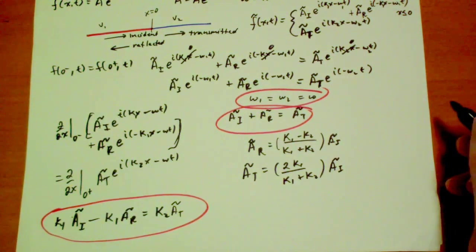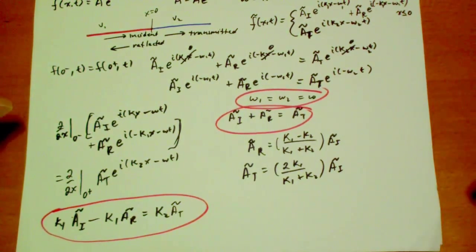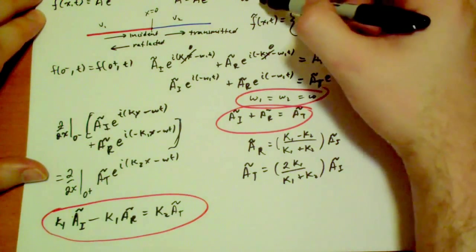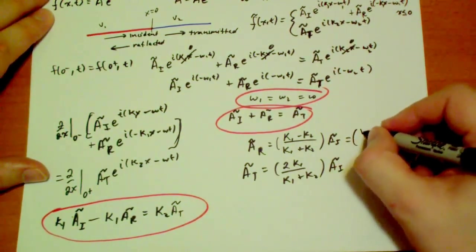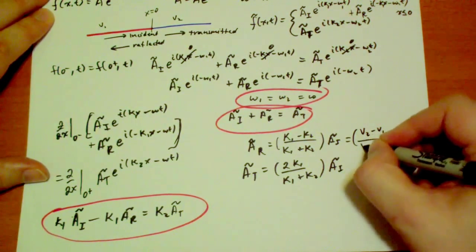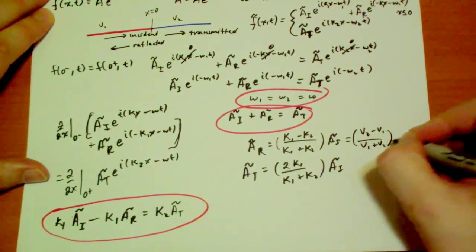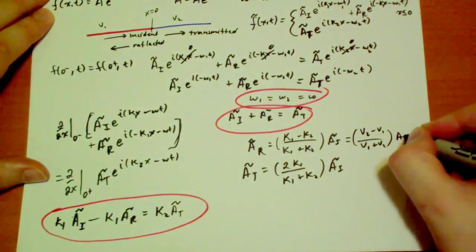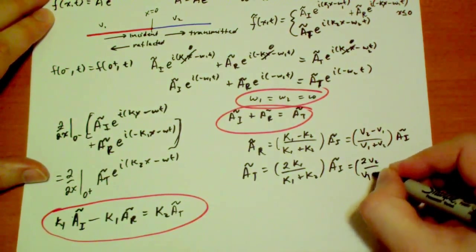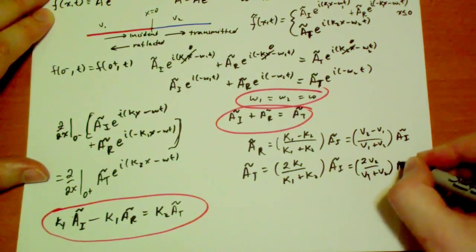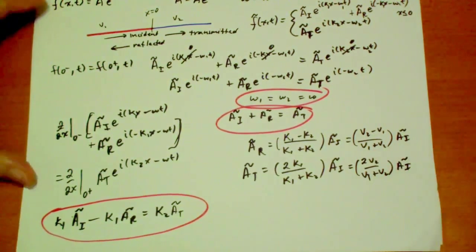Now reminding ourselves that kappa and lambda are related in this way and kappa and velocity are also related, we can rewrite this as just simply v2 minus v1 over v1 plus v2 ai. And this is just 2 v2 over v1 plus v2 ai.